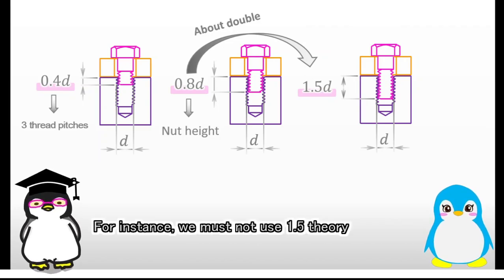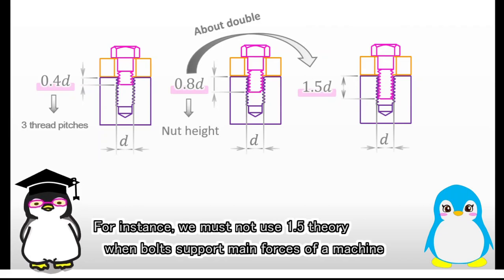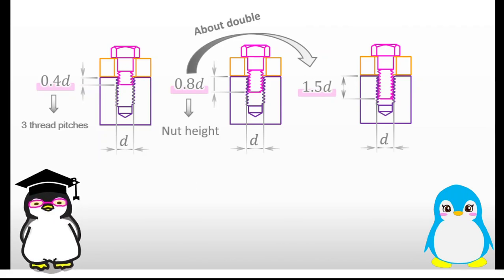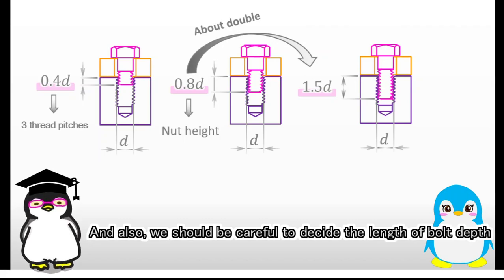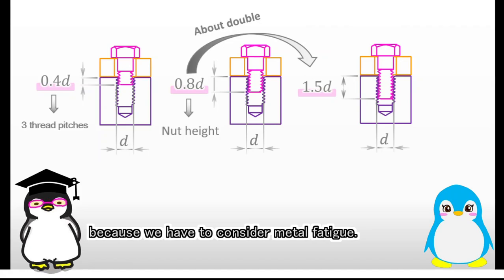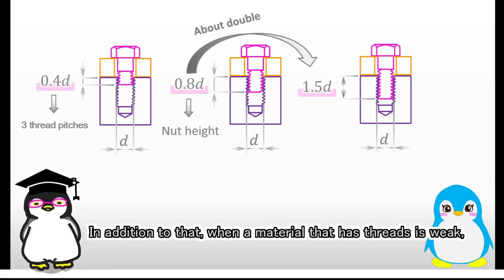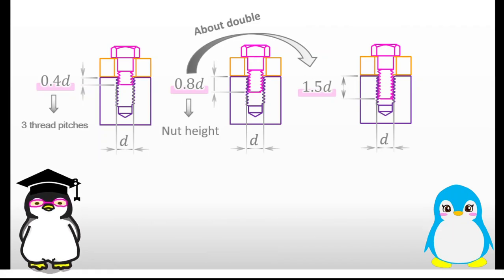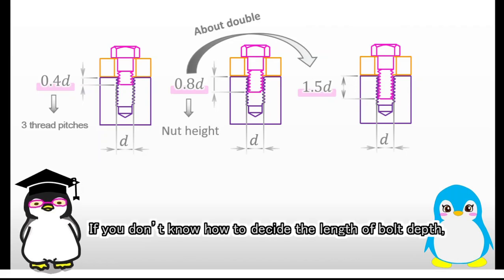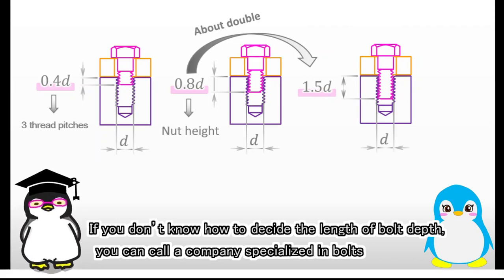For instance, we must not use 1.5 theory when bolts support main forces of a machine, because the bolts are supposed to support a heavy load. And also, we should be careful to decide the length of bolt depth when the forces applied to the bolts are repeated load, because we have to consider metal fatigue. In addition to that, when a material that has threads is weak, we must not use 1.5 theory. How can we decide the length of bolt depth when we have concerns like what you said?